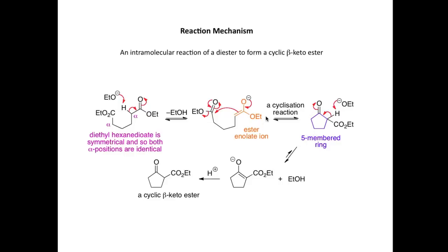Both the cyclization and the deprotonation steps are reversible. But when this five-membered ring is formed, the equilibrium is drawn towards this product because it contains a very acidic hydrogen atom on a carbon between two carbonyl groups. As soon as the five-membered ring is formed, it's deprotonated by the ethoxide ion. The equilibrium lies heavily to this side, and we can stabilize the negative charge on the oxygen, including through the carbonyl group of the ester. Finally, at acidic workup, we repronate this ester enolate ion and form a cyclic beta-ketoester, which is the product of this reaction.